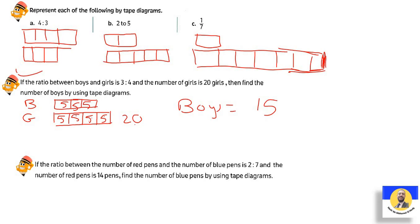The next: If the ratio between the number of red bands and the number of blue bands is 2:7, and the number of red bands is 14. So first we have red and blue. We draw the first, it's only 2. And the second one will be 7: 1, 2, 3, 4, 5, 6, 7. It said the number of red is 14. So 14 divided by 2 will be 7 here and 7 here. So each one will be 7, 7, 7, 7, 7, 7, 7. So 7 by 7 will be 49 blue bands.